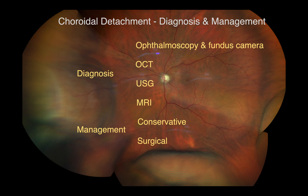If patients have hypotony secondary to topical antihypertensive medications, those should be stopped immediately. In patients presenting with angle closure, it is important to differentiate between a case of pupil block that requires peripheral iridotomy and a choroidal detachment that is causing a shallow anterior chamber and iris apposition.